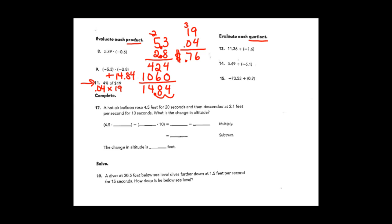To divide — this might be a little harder. We haven't done long division and many of you are used to using a calculator. So let's do number thirteen together: eleven and 36 hundredths divided by one and six tenths. The divisor always goes outside in long division. Remember your divisor has to be a whole number, so I'm going to multiply by ten — move the decimal over — now I have sixteen. Do the same to my dividend: move over one place. Immediately bring that decimal point up to the quotient.